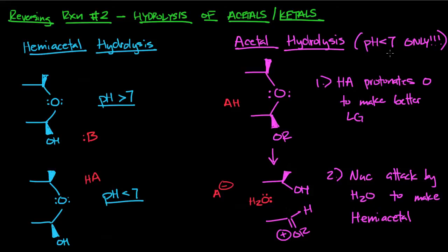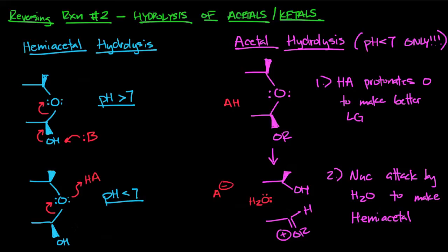The mechanism I'm going to draw also applies to ketals. It can be catalyzed at a pH greater than 7 because the base can pluck off this H, and then the resulting negative charge — you can push those electrons to form a double-bonded carbon to oxygen, and that's going to help push out the other oxygen. What the H does is it protonates the oxygen, making it a better leaving group, and when it's a better leaving group you can hydrolyze the whole thing.